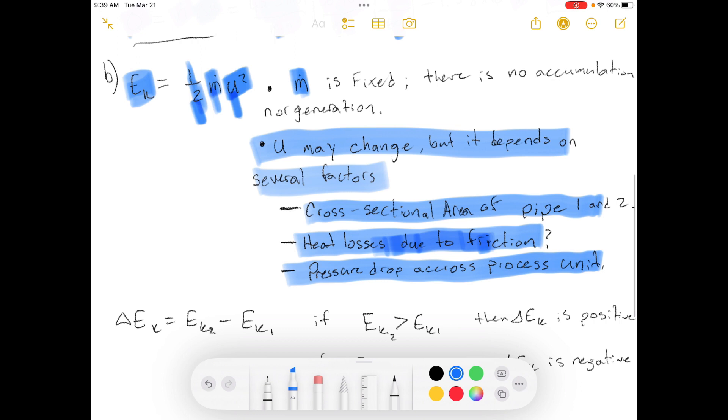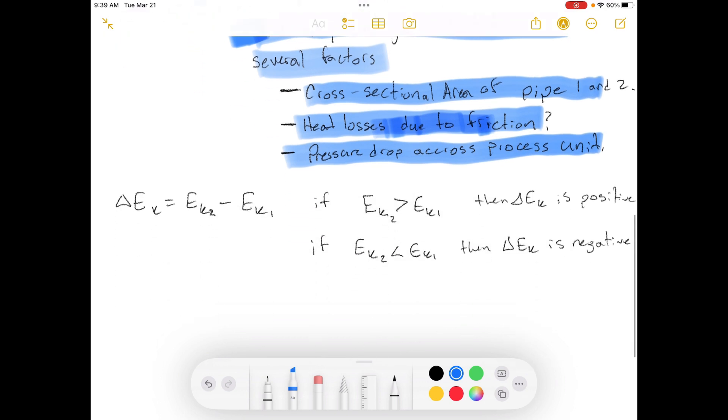So if we were able to calculate what this was for stream one and stream two, then we could see what the difference is. So if we needed to find out if it was positive or negative, you would say, is the kinetic energy in stream two less than or greater than the kinetic energy in stream one? If stream two is more than stream one, then the change is positive. If the energy in stream two is less than the energy in stream one, then the change is negative.